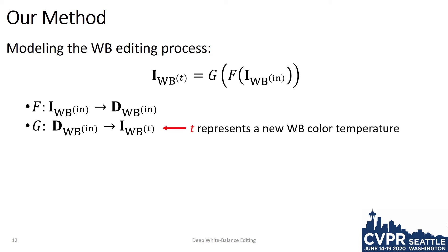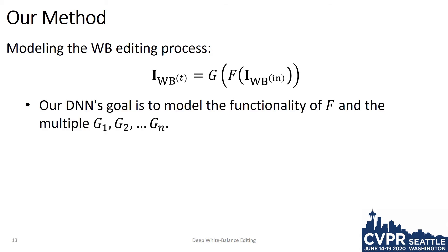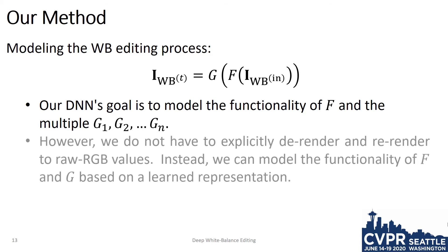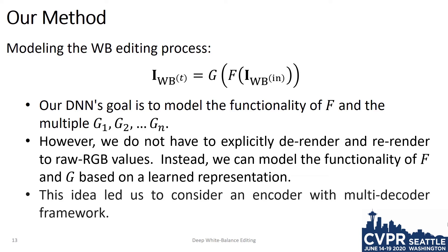Here, we use the superscript T to denote the color temperature of the white balance setting. Note that we will have many G functions, each representing one of the different white balance settings. Our DNN's goal is to model the functionality of F and the multiple G functions. We do not, however, have to explicitly de-render and re-render our input image to raw RGB values. Instead, we can model the functionality of F and G based on a learned representation.